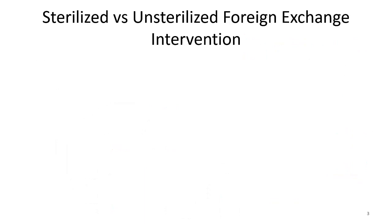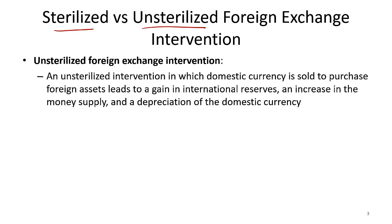There are two kinds of interventions. One is called sterilized intervention and the other is unsterilized foreign exchange intervention. Under unsterilized intervention, when domestic currency is sold to purchase foreign assets, it leads to a gain in international reserves, an increase in money supply, and a depreciation of the domestic currency. Essentially, under unsterilized intervention, when the Fed buys or sells foreign currencies, it has an impact on the exchange rate — the exchange rate of, say, the dollar against the euro or any other currencies in the world.